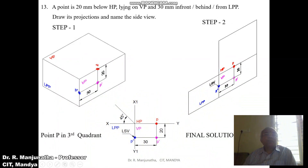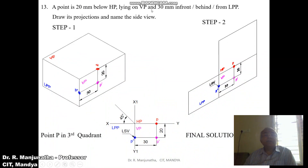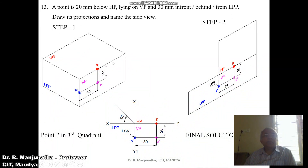A point is 20mm below HP, lying on VP, and 30mm in front of or behind the LPP. Draw its projections and name the side view. The condition is that the point is lying on VP and below HP. Since it is lying on VP, we cannot identify which quadrant. Below HP conditions occur in the third quadrant as well as the fourth quadrant. We are going to consider the problem in the third quadrant.